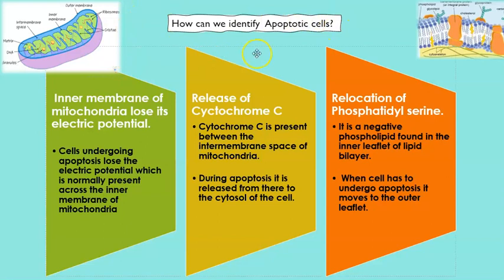Now let's see how an apoptotic cell can be identified. There are certain cells called macrophages which identify apoptotic cells — cells that are undergoing cell death. Macrophages come and engulf these apoptotic cells because they don't want such waste to accumulate inside our body. There are certain signals through which macrophages can identify which cells are apoptotic.